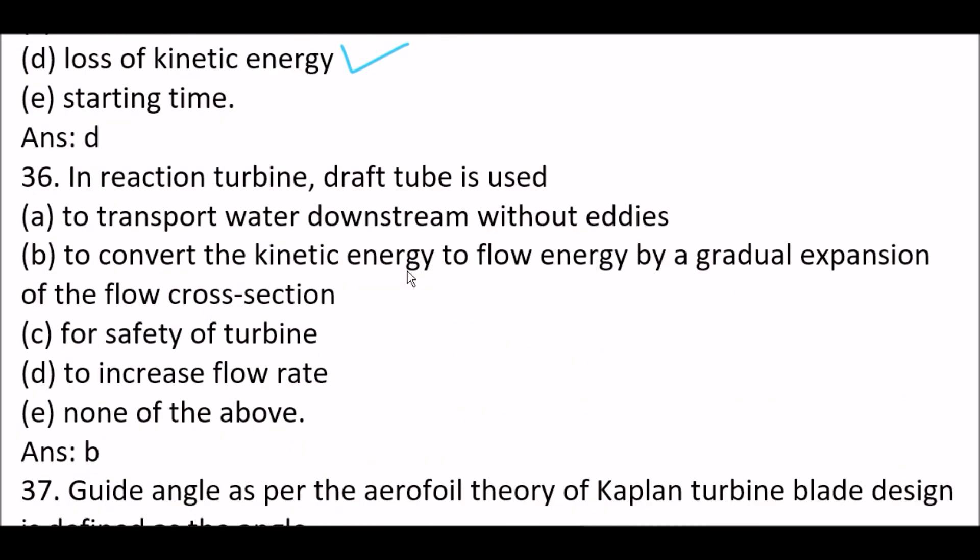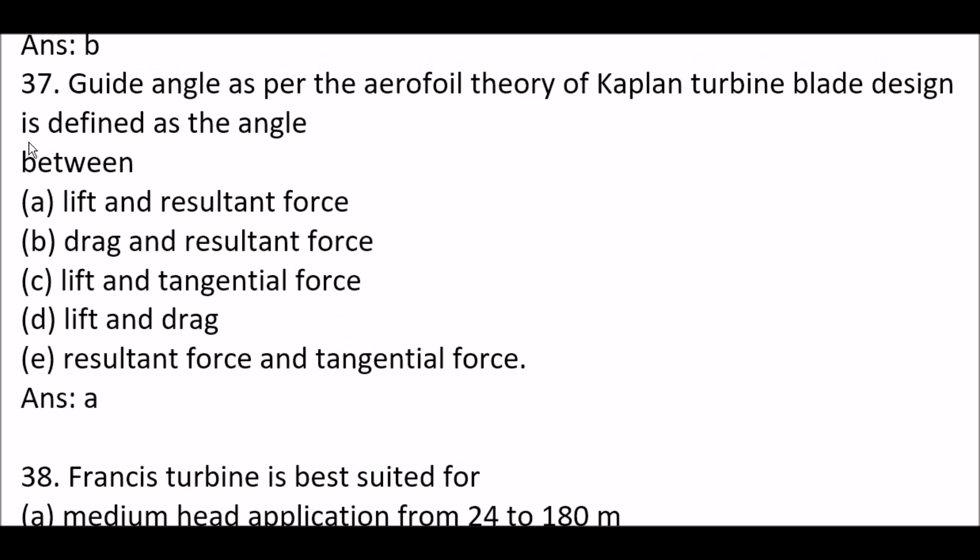Next question. Casing of a centrifugal pump is designed so as to minimize loss of kinetic energy. Next question. In reaction turbine, draft tube is used to convert the kinetic energy to flow energy by gradual expansion of the flow cross section.